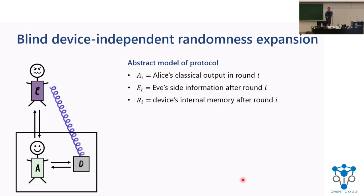We already have systems Ai, which are Alice's output systems, and Ei, which are Eve's side information systems after the respective rounds. We also have this device, which is untrusted and we don't want to make any assumptions about it either. In particular, the device might have some sort of memory that it uses to remember what happened in previous rounds and adapt its behavior in future rounds. So we account for this by introducing an additional system Ri, which describes the device's memory after round i.